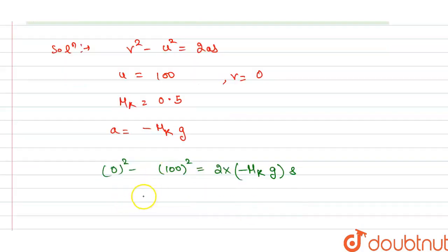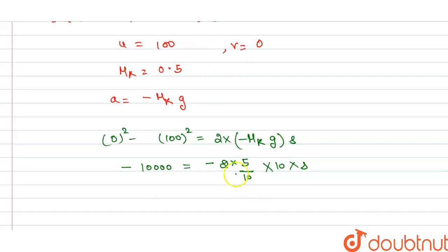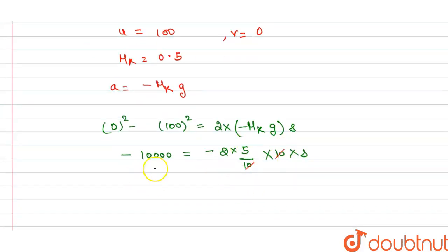So from this we get -10000 = -2 × 0.5 × 10 × s. We can write this as -10000 = -10s. We have to calculate s here, so terms will cancel out.